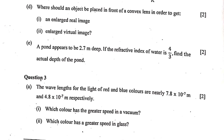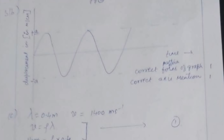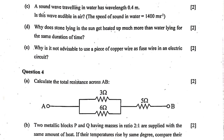Question 3b: Draw a graph between displacement from mean position and time for a body executing free vibration in a vacuum. The diagram is on screen. Question 3c: A sound wave traveling in water has a wavelength of 0.4 m — is this wave audible in air? Yes, it is audible in air because the frequency works out to 3500 Hz, and the audible frequency range is 20 Hz to 20,000 Hz, so it falls within that range.